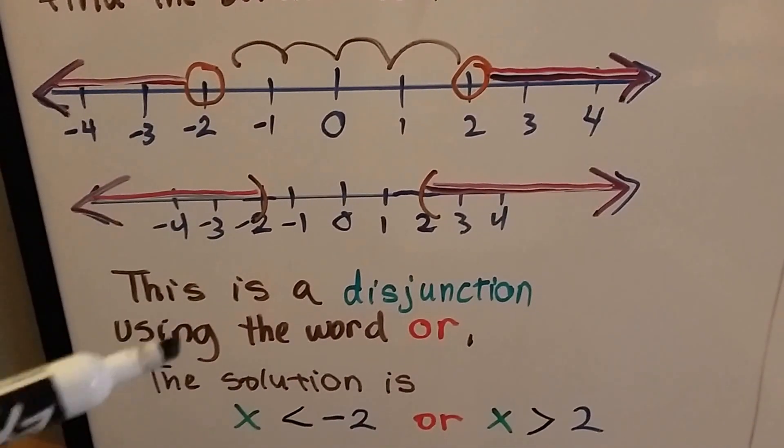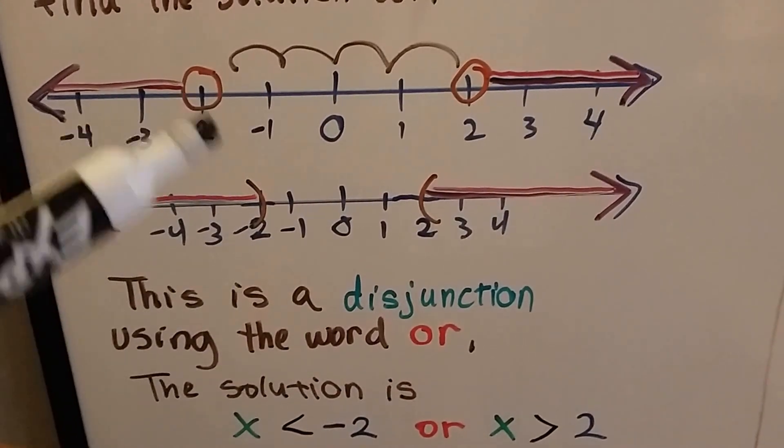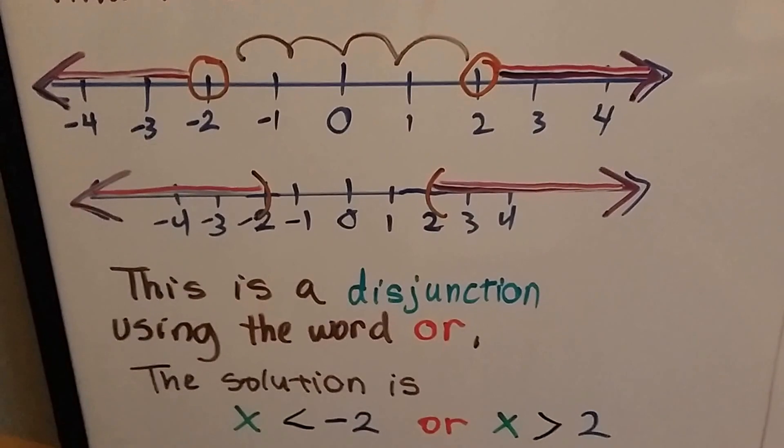If you want to write it like I do in Algebra 2, we use a parentheses. The open dot means it's not included, and that's what the parentheses also means.